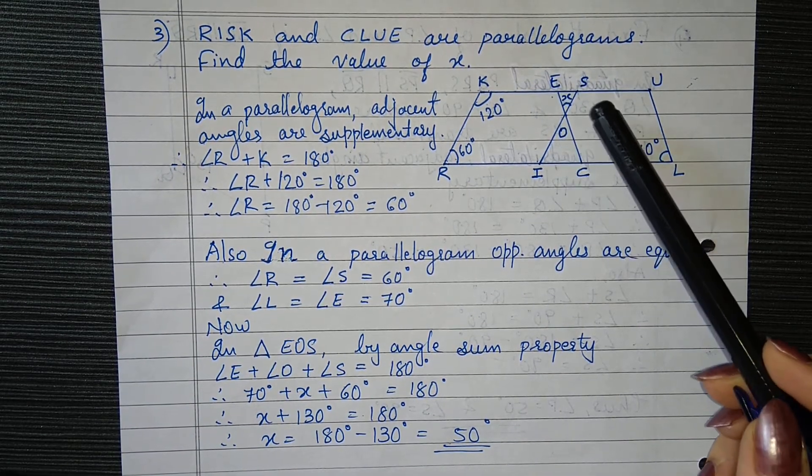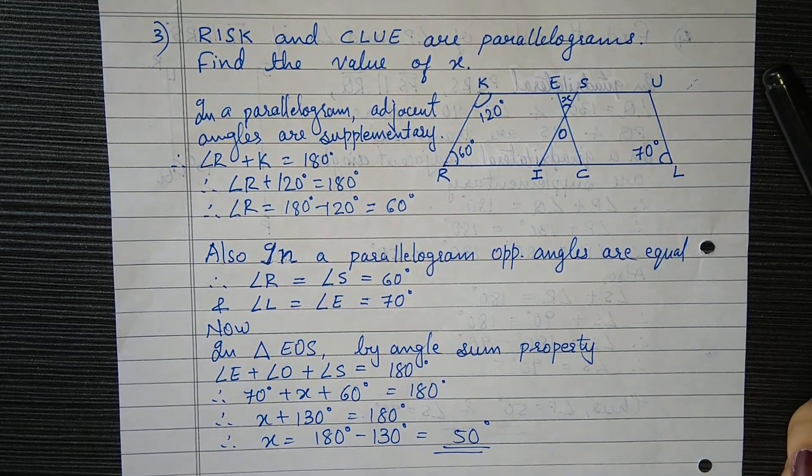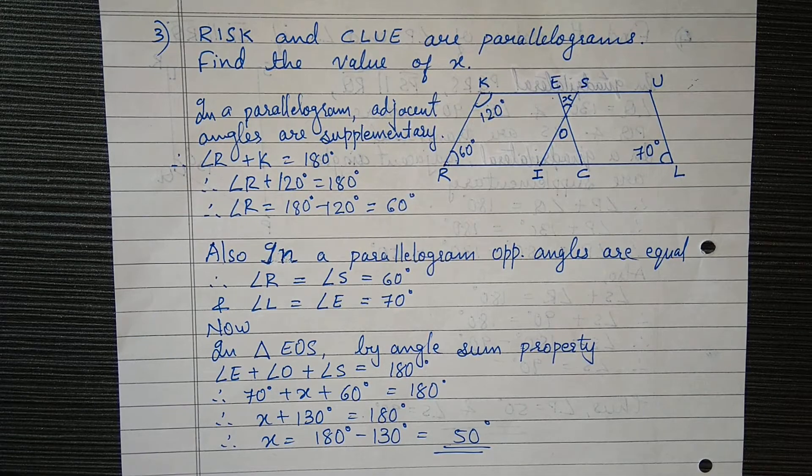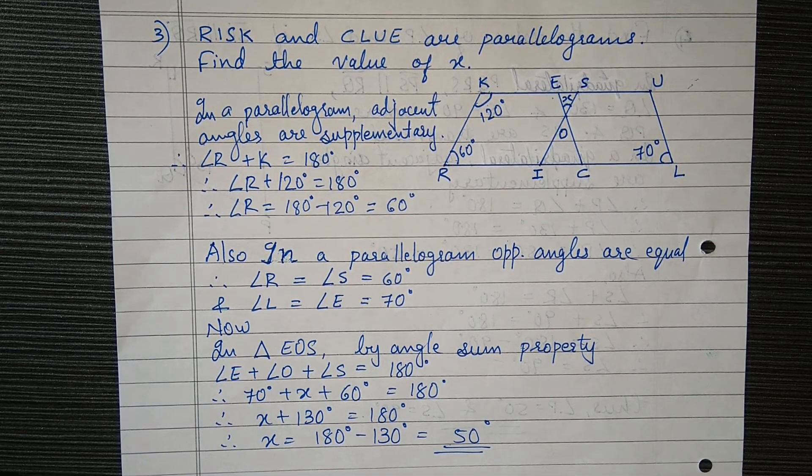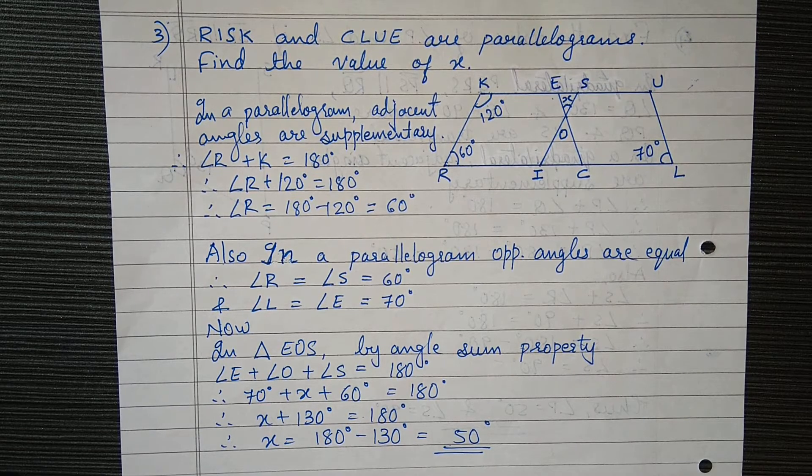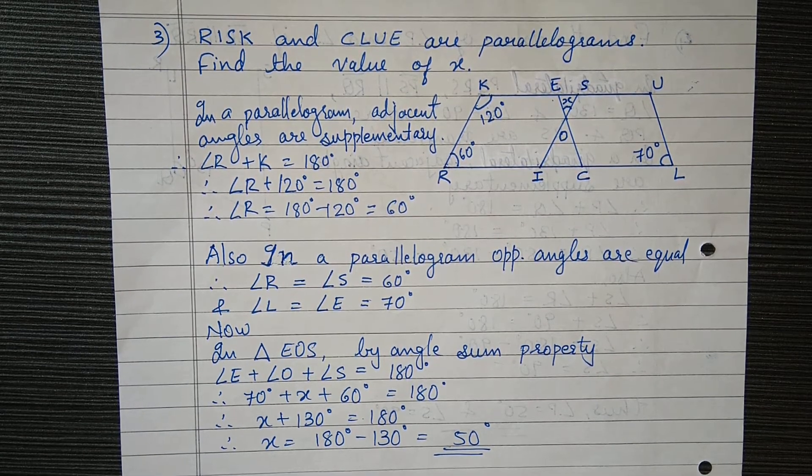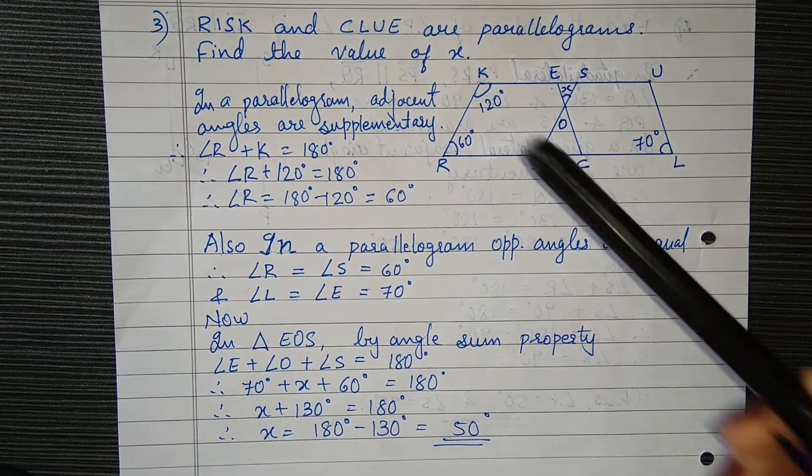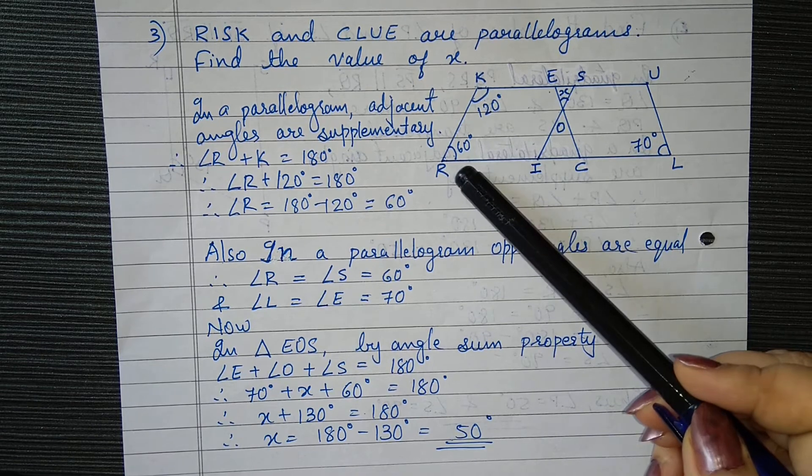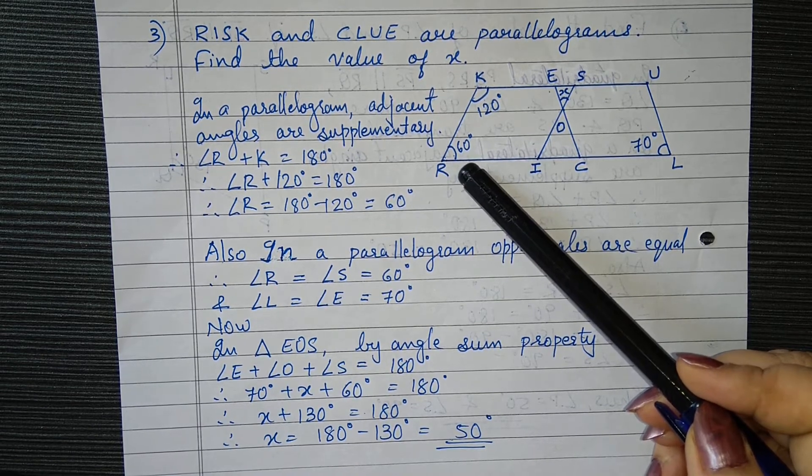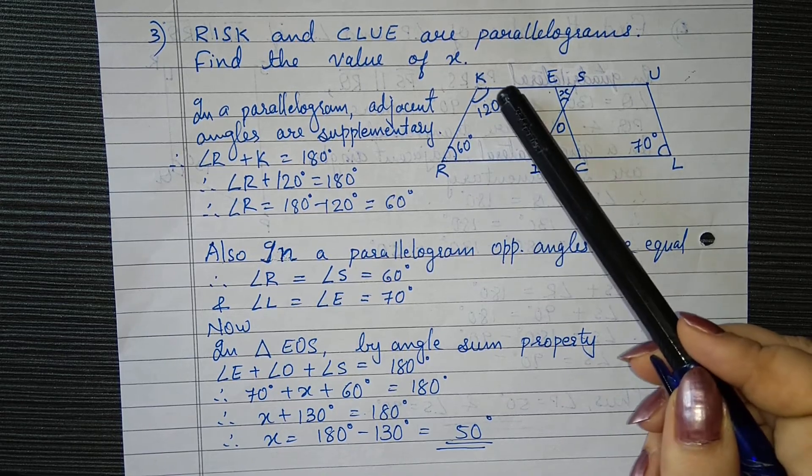What we are supposed to find here is angle X. Now, looking at the properties of parallelogram, we know that adjacent angles of a parallelogram are supplementary and opposite angles are equal.